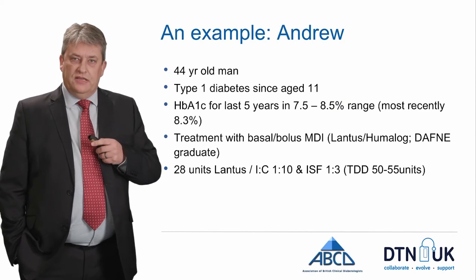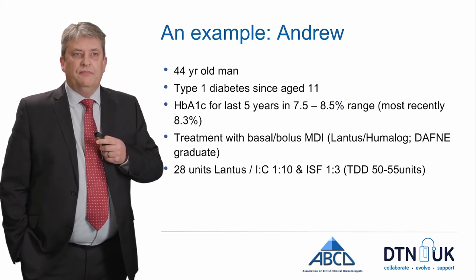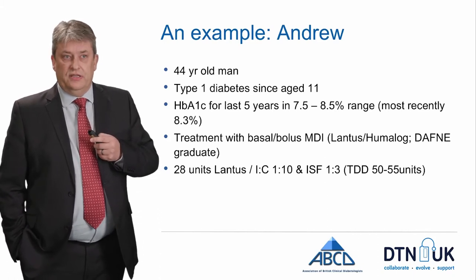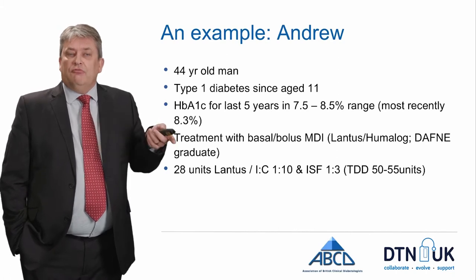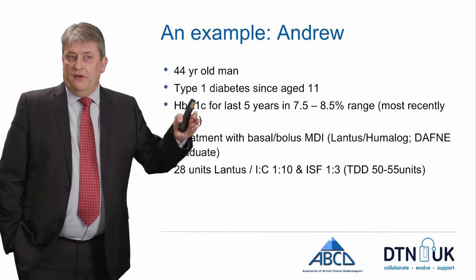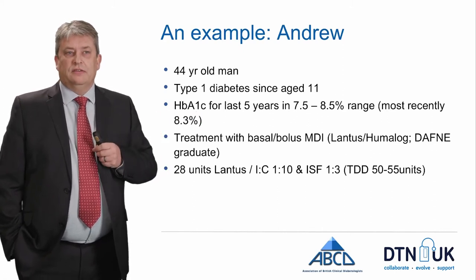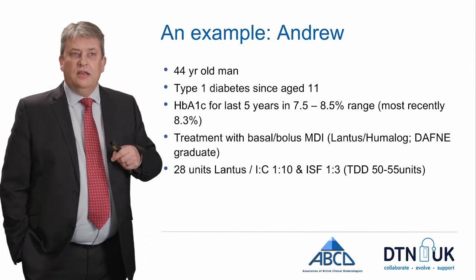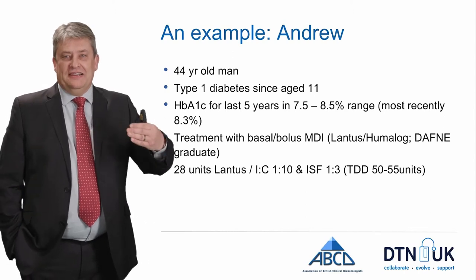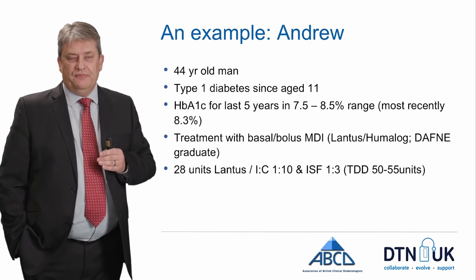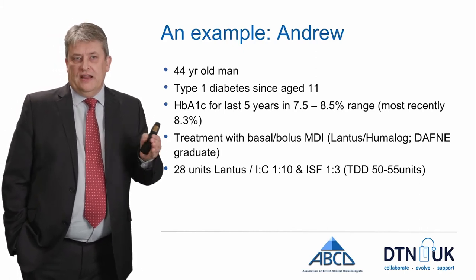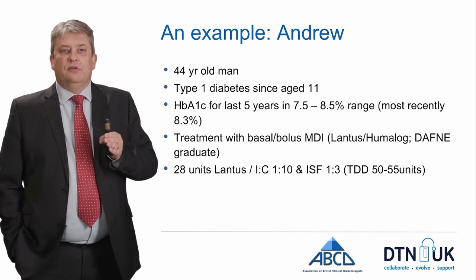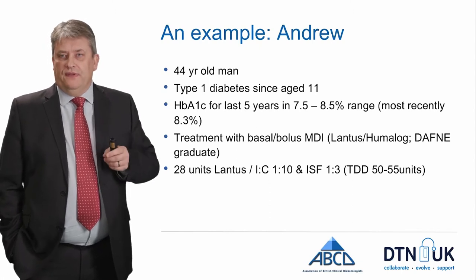I'd like to give an example of that process to finish with — a gentleman from my clinic. He's a 44-year-old man who has had type 1 diabetes for just over 30 years. His haemoglobin A1c has generally run between 7.5 and 8.5%, most recently 8.3%. He uses multiple daily dose insulin — Lantus as his background insulin and Humalog as his mealtime insulin. He's a DAFNE graduate, having done carbohydrate counting. His insulin use is about 28 units of Lantus per day, with an insulin-to-carbs ratio of 1 unit for 10 grams and an insulin sensitivity factor of 1 unit for 3 millimoles to correct. On average he uses somewhere between 50 and 55 units of insulin per day.